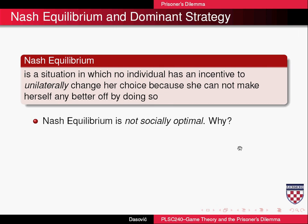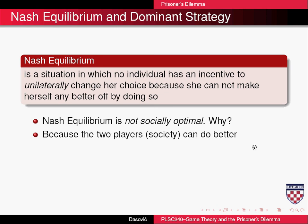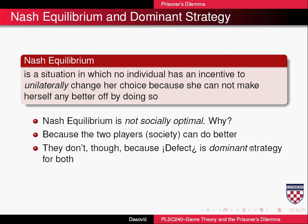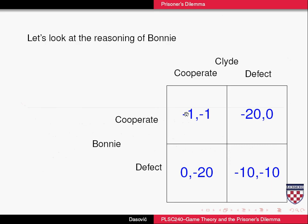A Nash equilibrium is not socially optimal, because as explained, the two players — society — can do better. They don't, because defect is the dominant strategy for both. What does it mean to be a dominant strategy?